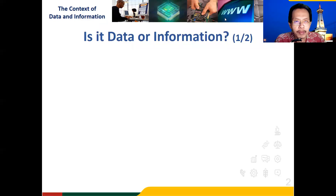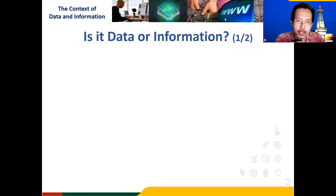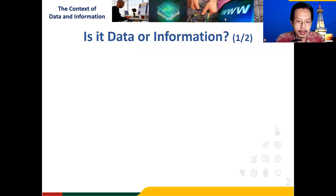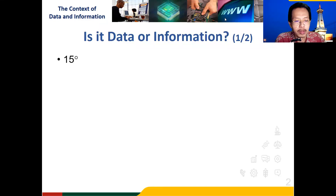Now, let's think about what is data and what is information. It's often that those terms are interchanged between one another. We think something is data while it's actually information, or we think something is information while it's actually data. To make it clear, let's say we have one number, like the number 15, for instance. 15 is absolutely just data, because we don't know what it is.